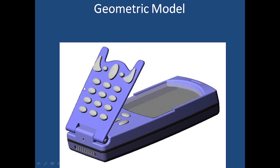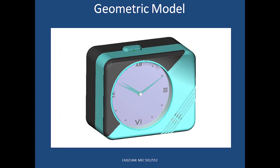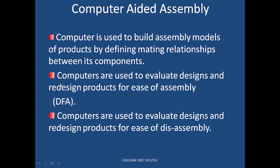This is an example of a geometric model of a part — a representative CAD model of a cell phone. I will be using the terms CAD model and geometric model interchangeably. The usefulness of this geometric model is that you can use it for a variety of downstream applications like computer-aided assembly, where you build assembled models of products by defining mating relationships between components. Computers are further used to evaluate and redesign products for ease of assembly.